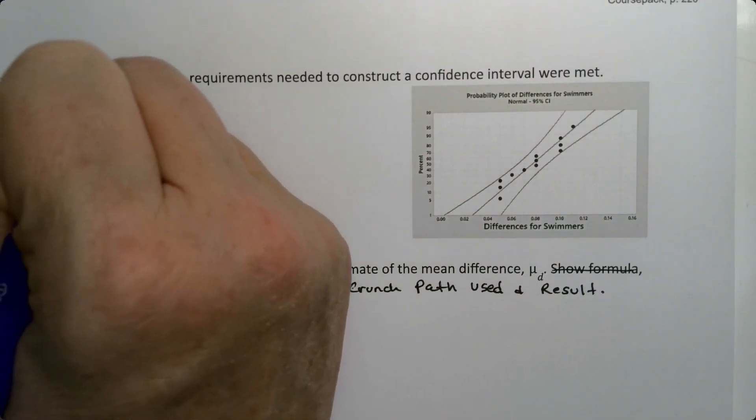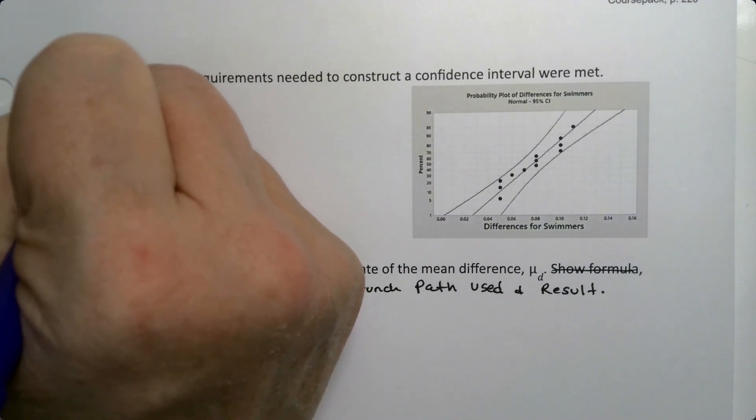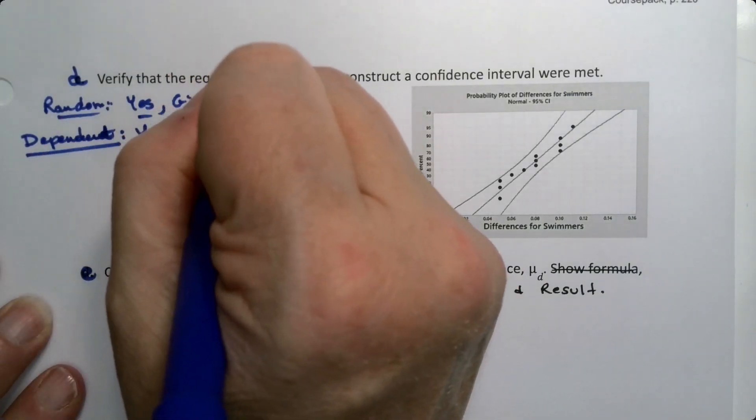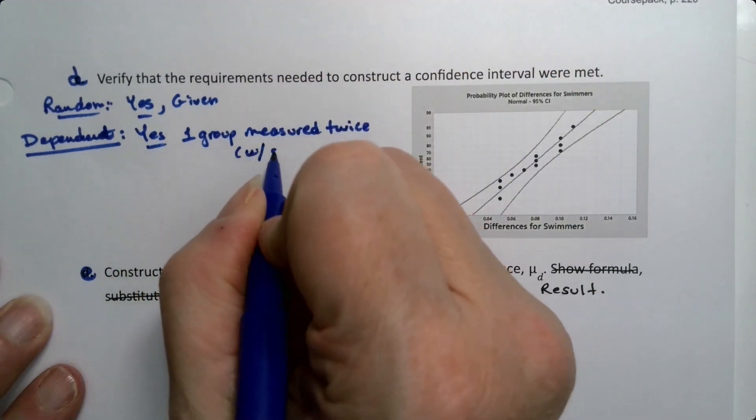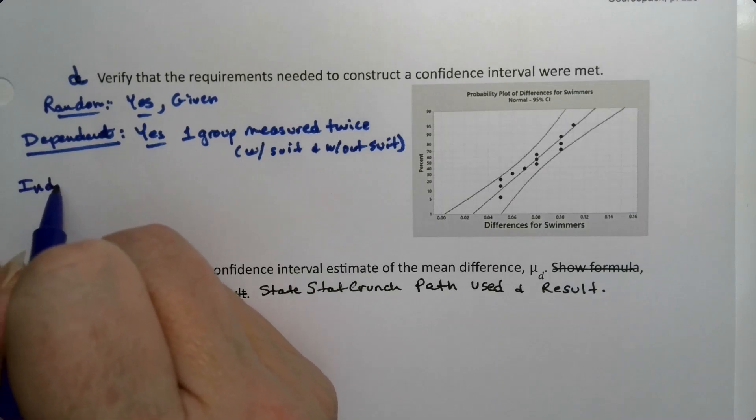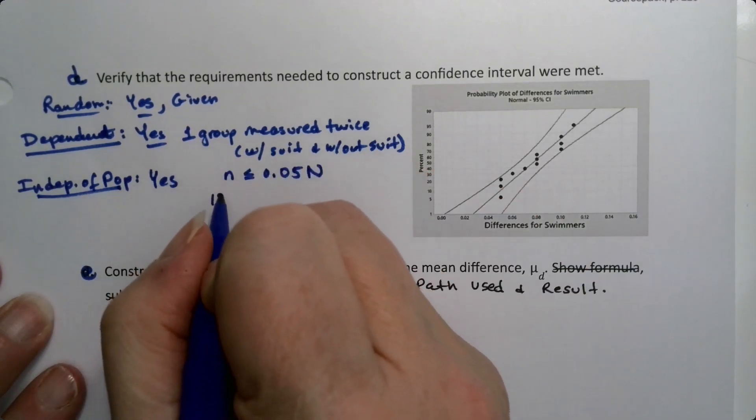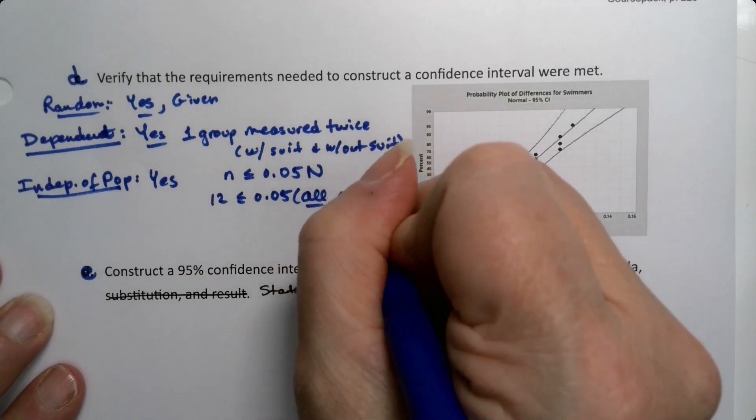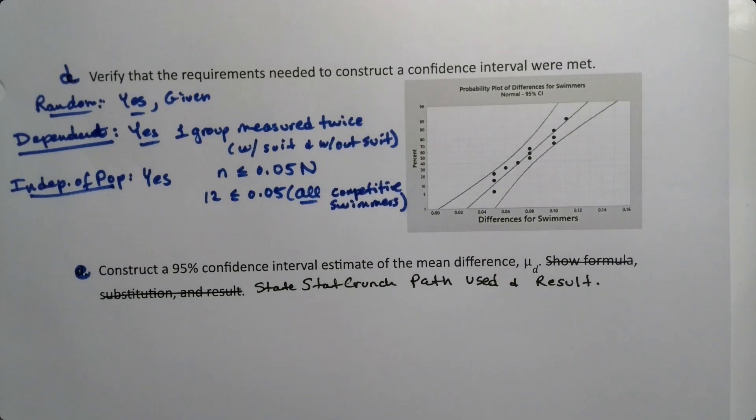Random is yes, it's given. Dependent, yes, it's because it's one group measured twice with the suit and without the suit. Independent of the population, you would need little n to be less than 0.05 capital N. So these 12 swimmers are less than 0.05 of all competitive swimmers and that is definitely the case, there's a lot of competitive swimmers out there in the world.